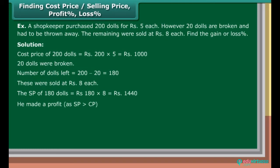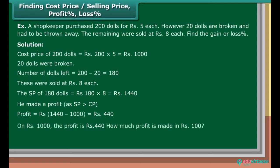He made a profit as SP is greater than CP. Profit is equal to Rs. 1,440 minus 1,000, which is equal to Rs. 440. On Rs. 1,000, the profit is Rs. 440. How much profit is made on Rs. 100? Profit is equal to Rs. 440 upon 1,000 into 100, which is equal to 44%.